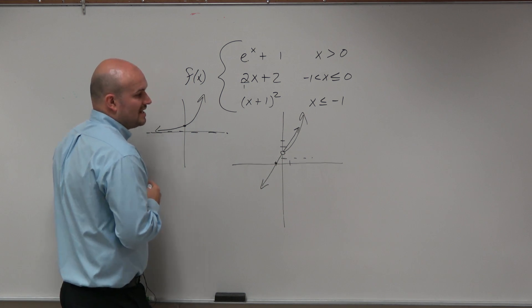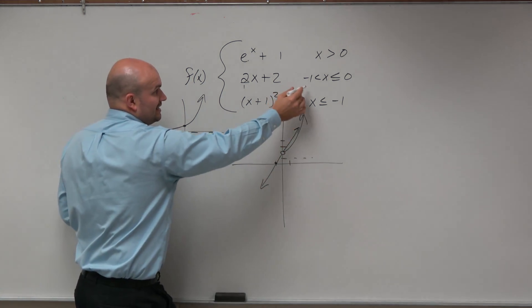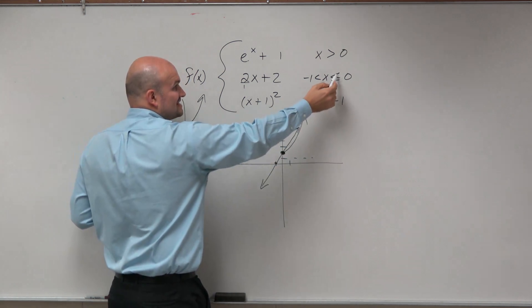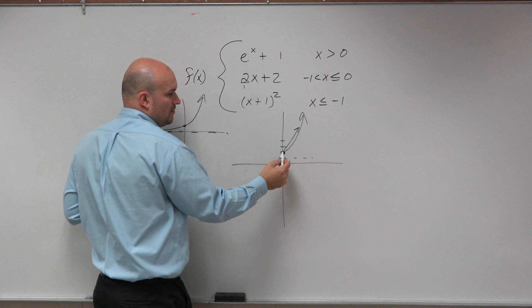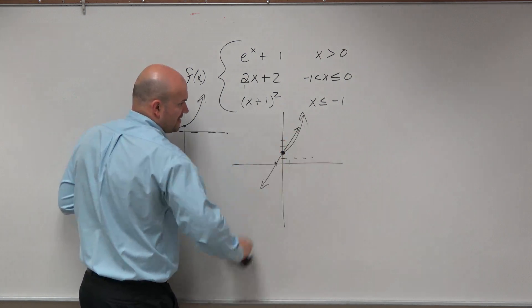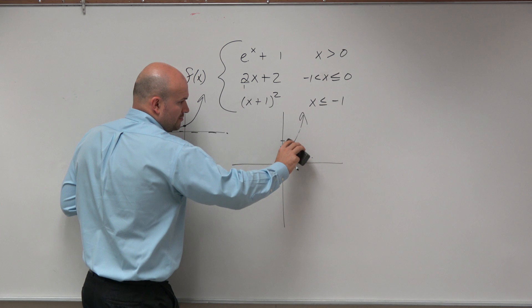Now, the problem with this line though is that it is equal to at 0, so that now gets filled in, but its x is less than or equal to 0. So, even though that's equal, nothing greater than 0 is a part of this graph. So I'm actually going to remove that portion.